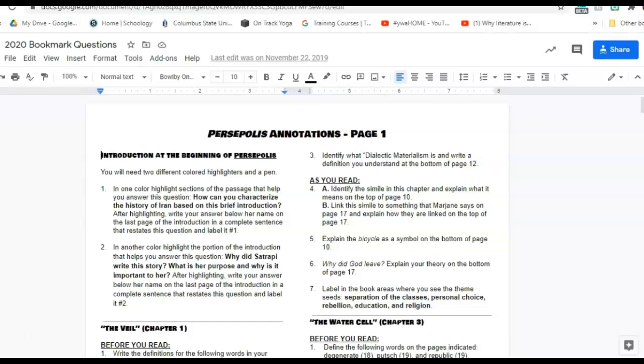Question two says in another color highlighter highlight the portion of the intro that helps answer a different question. After highlighting, write your answer below her name on the last page of the intro in a complete sentence that restates this question and label it number two. So again it gives you instructions for highlighting, where to write your answer, and how to label your answer.